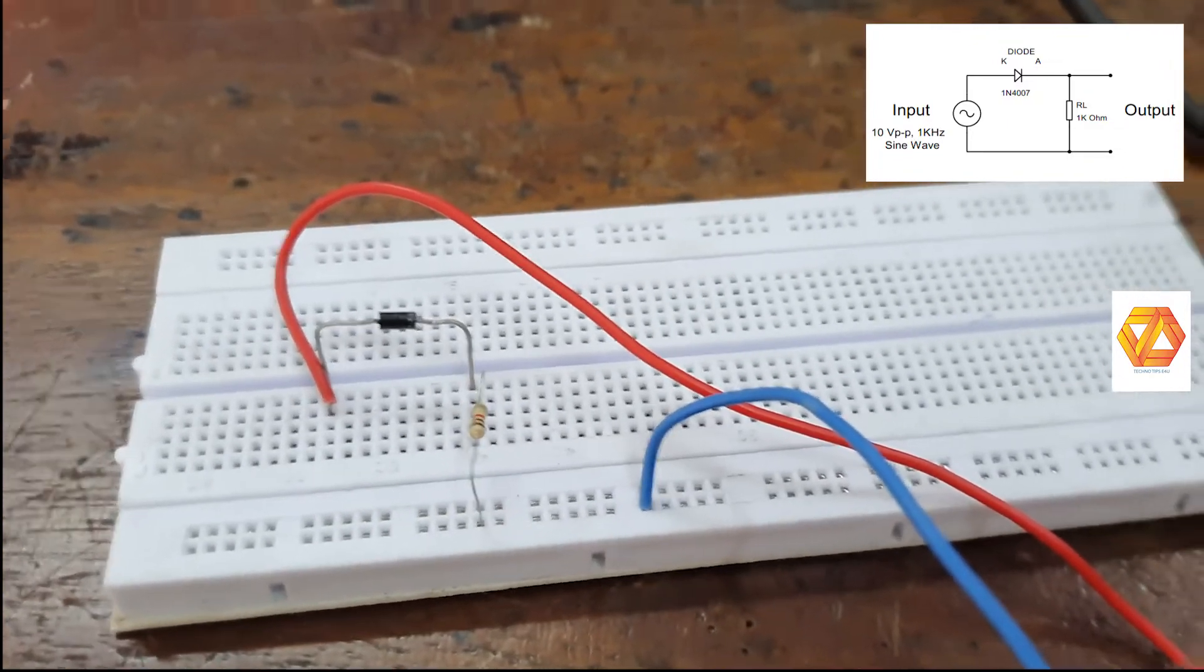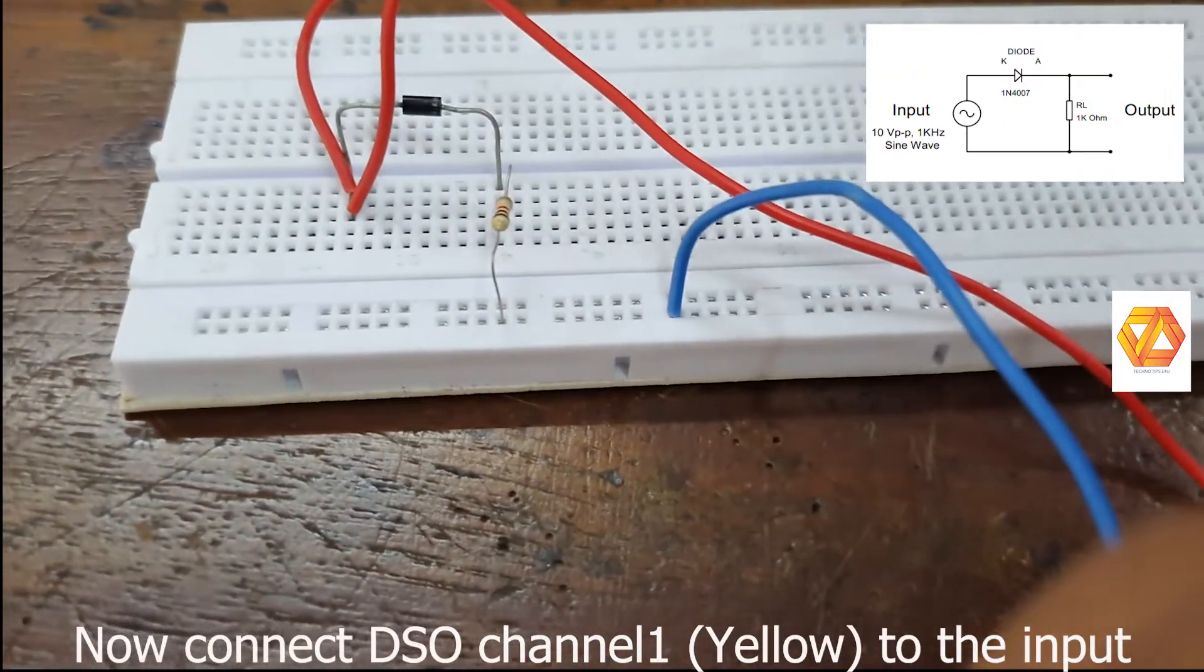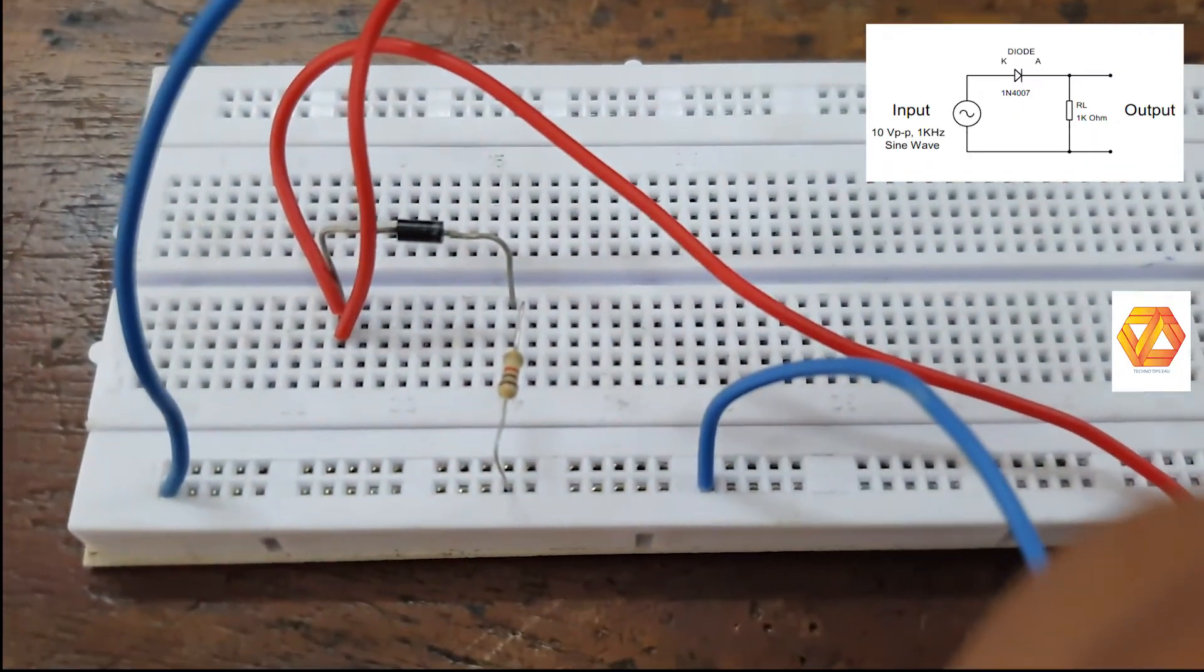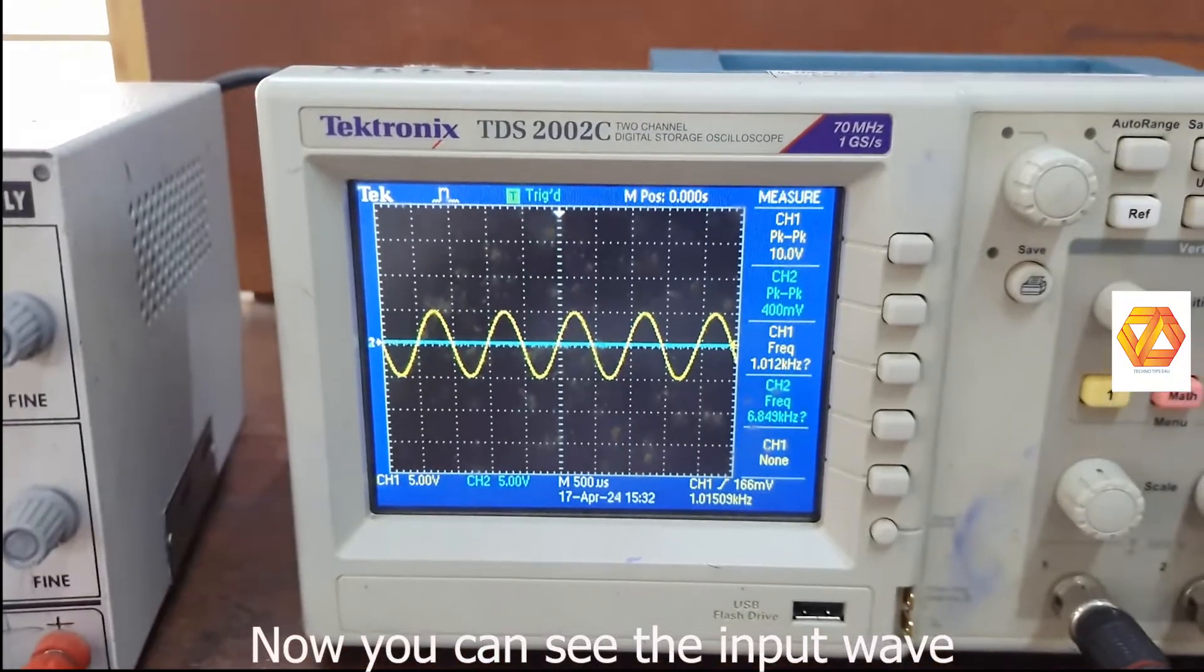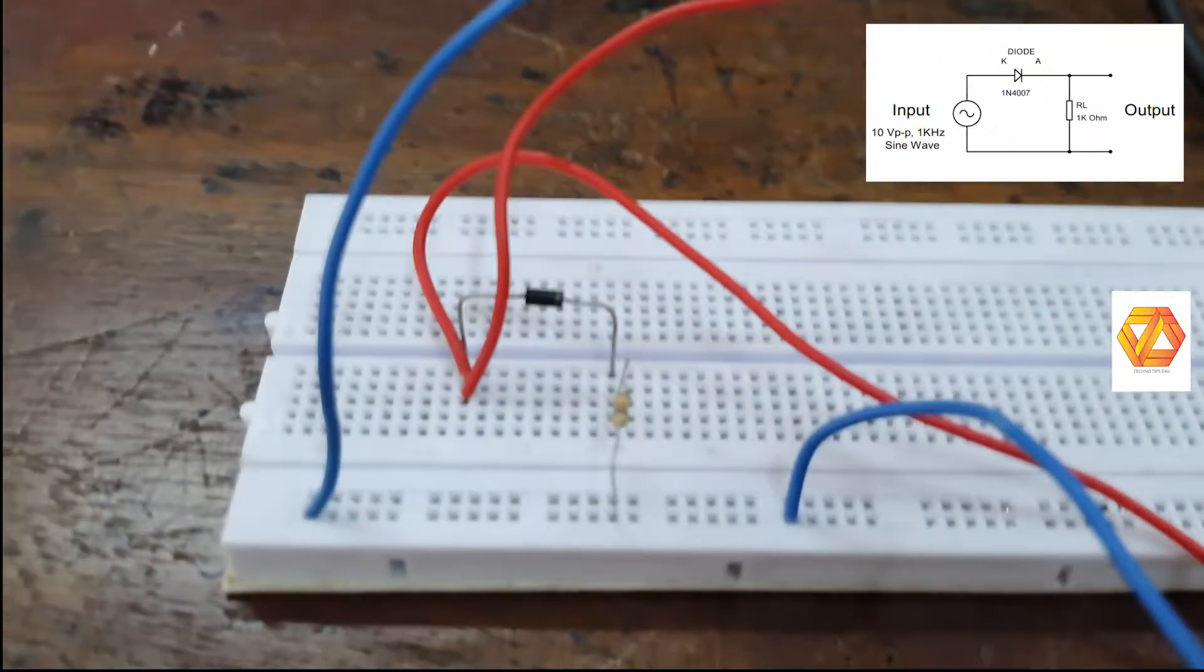In order to see the input waveform, connect DSO channel 1, that is yellow, into the input. Now you can see the input waveform. The yellow waveform is the input, a 1 kilo-hertz, 10 volt peak-to-peak sine wave.